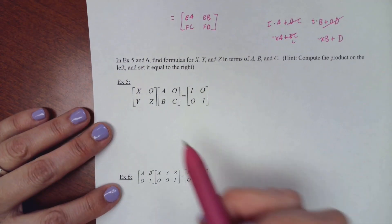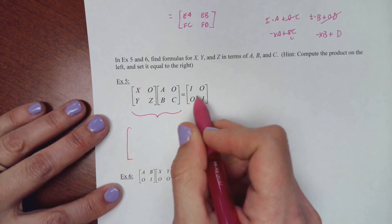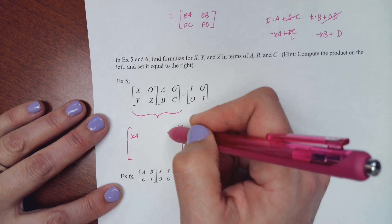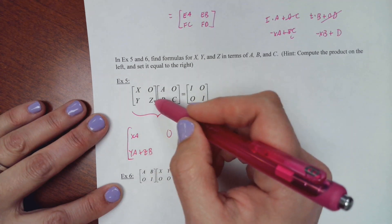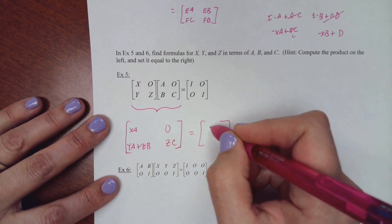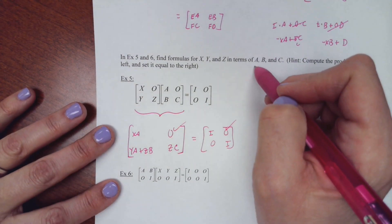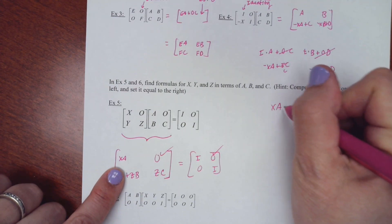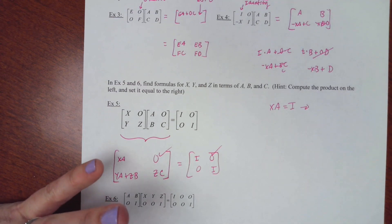Now we're told what the product equals, so we can find formulas for X, Y, and Z in terms of A, B, C. Multiplying [[X, 0], [Y, Z]] times [[A, B], [C, D]]: top-left gives X·A + 0·B = XA, and we know this equals I. So XA = I, meaning X is the inverse of A, i.e., X = A⁻¹.